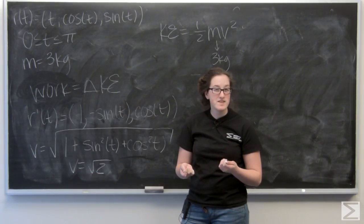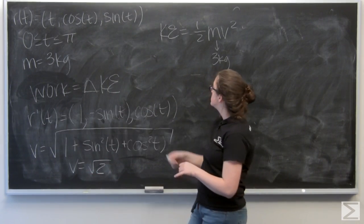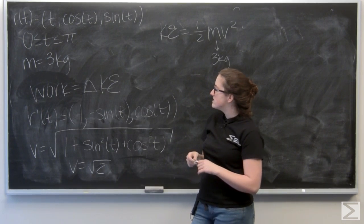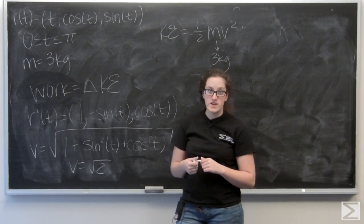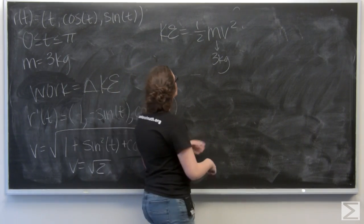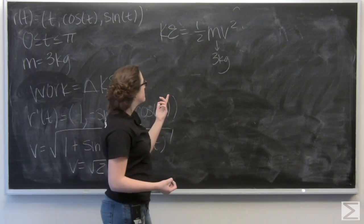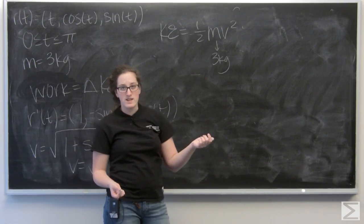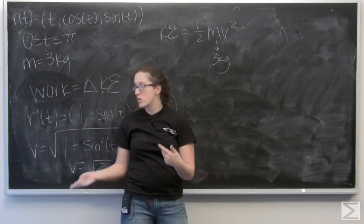Well, my velocity is actually independent of time. So, if I want to calculate the kinetic energy at t equals zero and t equals pi, there's really nothing to change since my velocity is constant. So, there's actually not any kinetic energy changing. So, the work is zero.